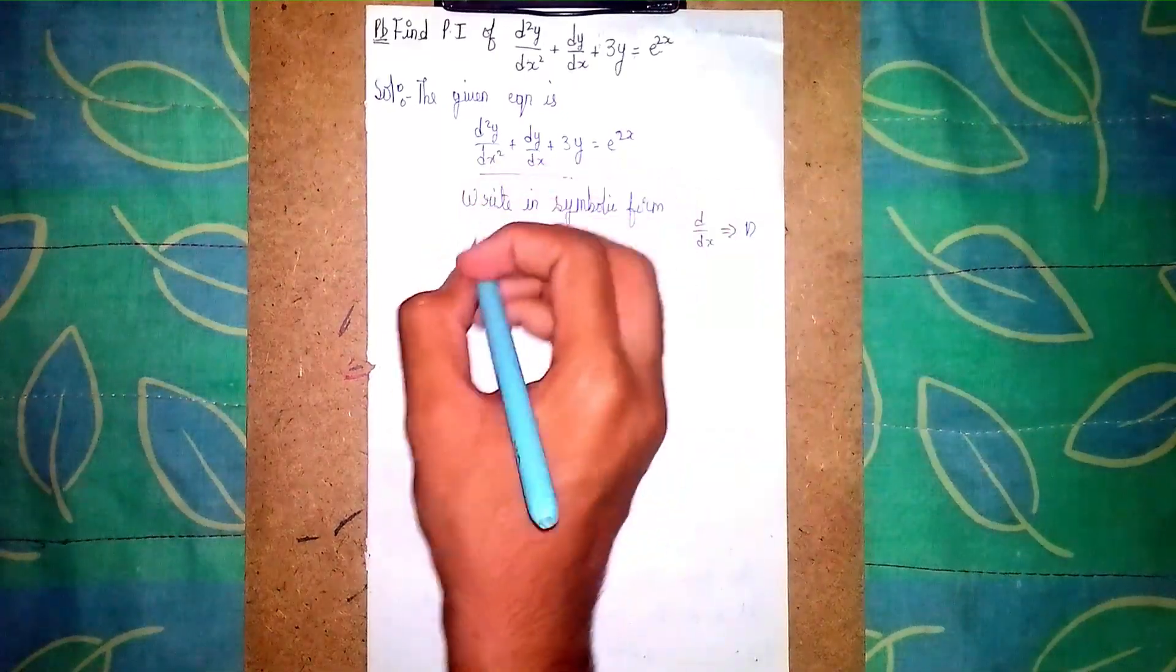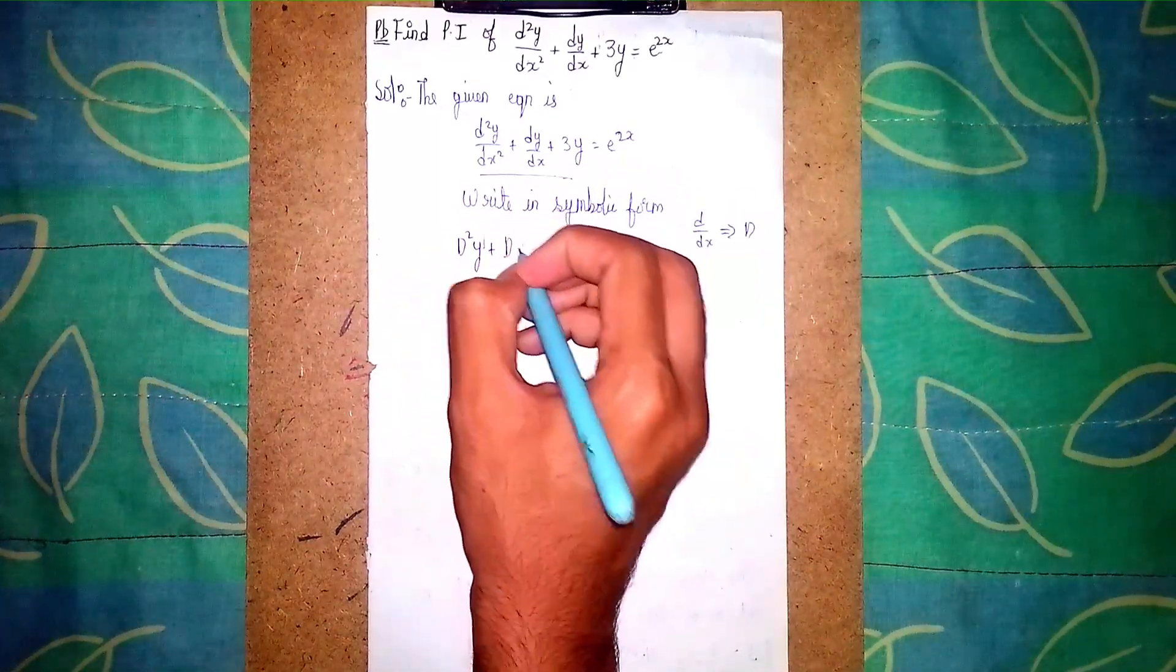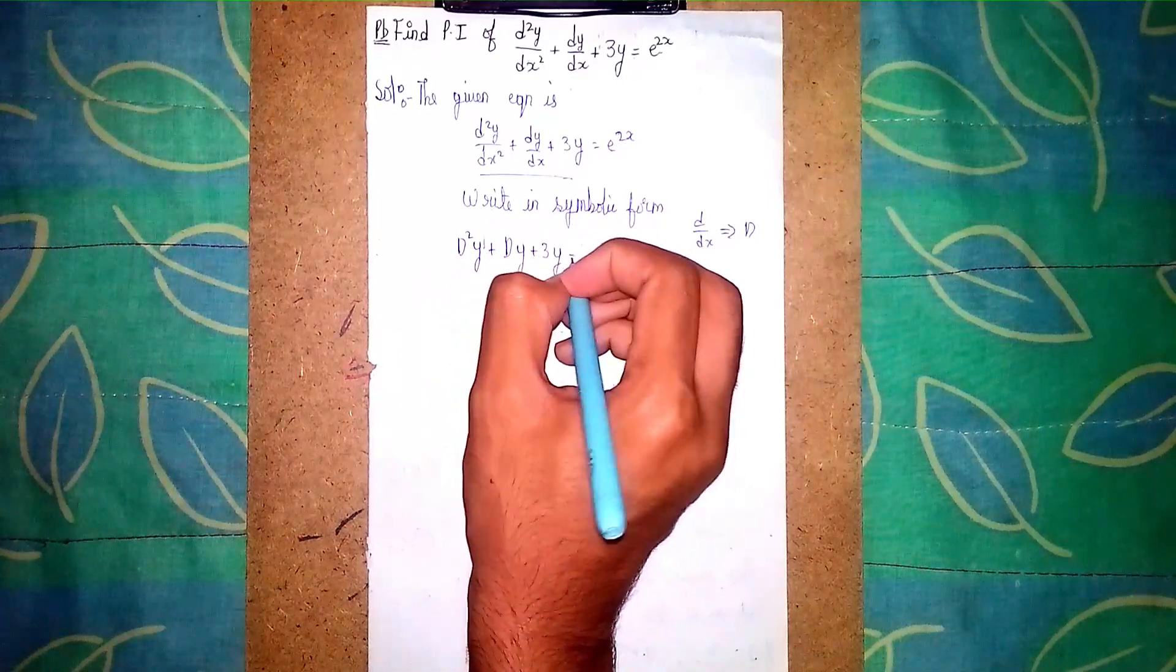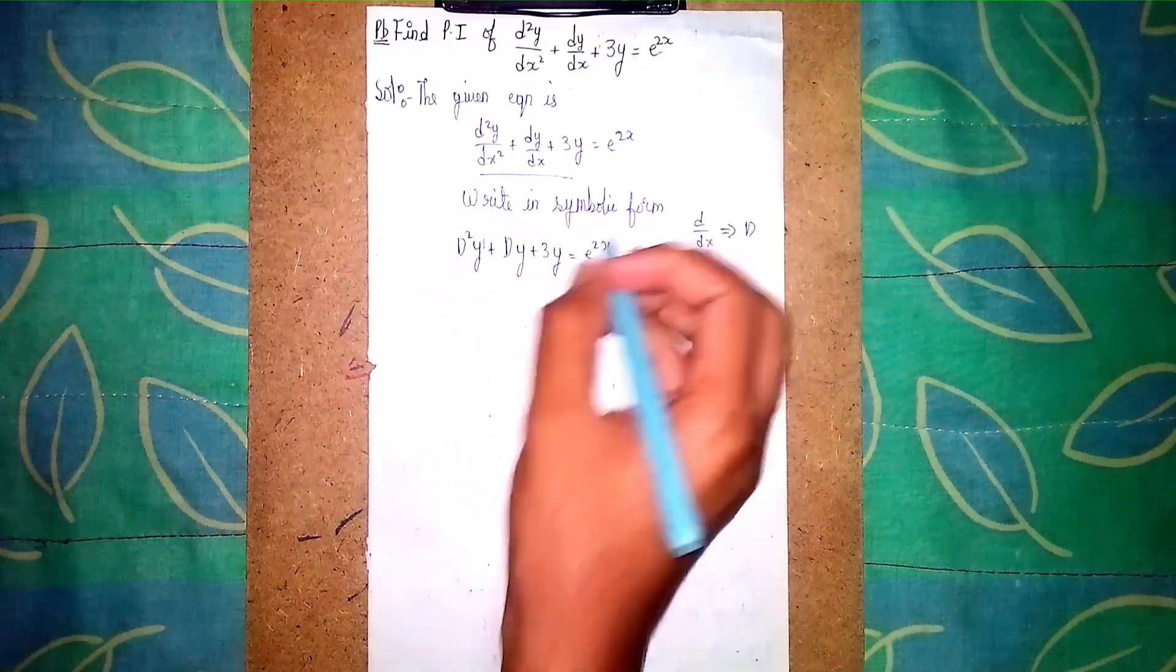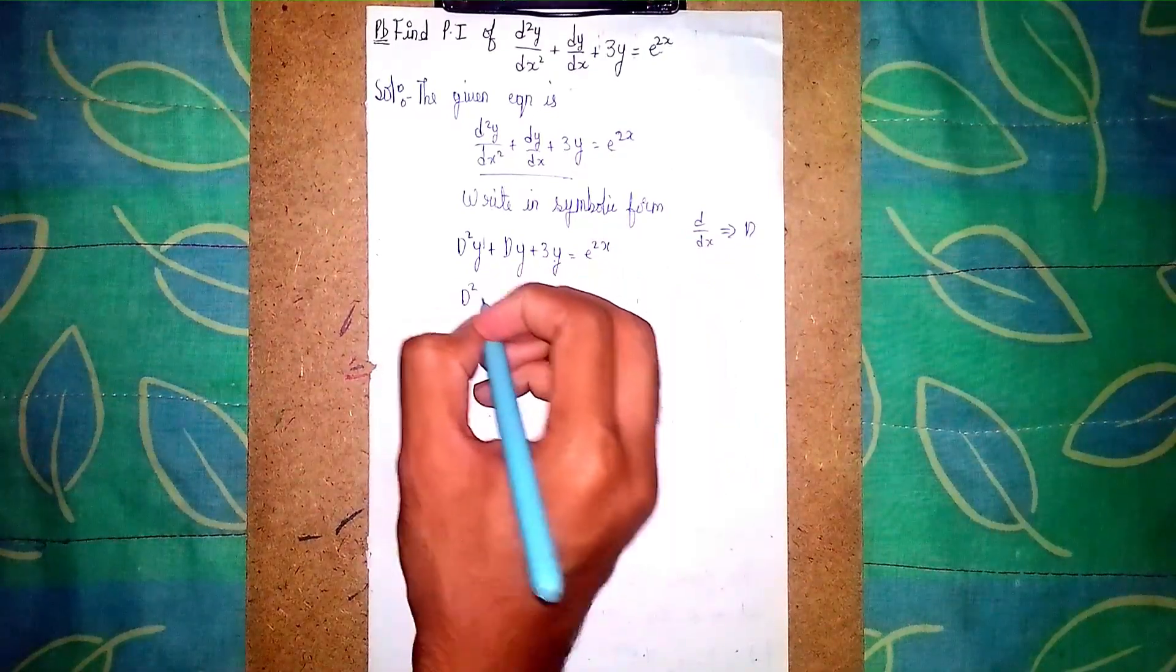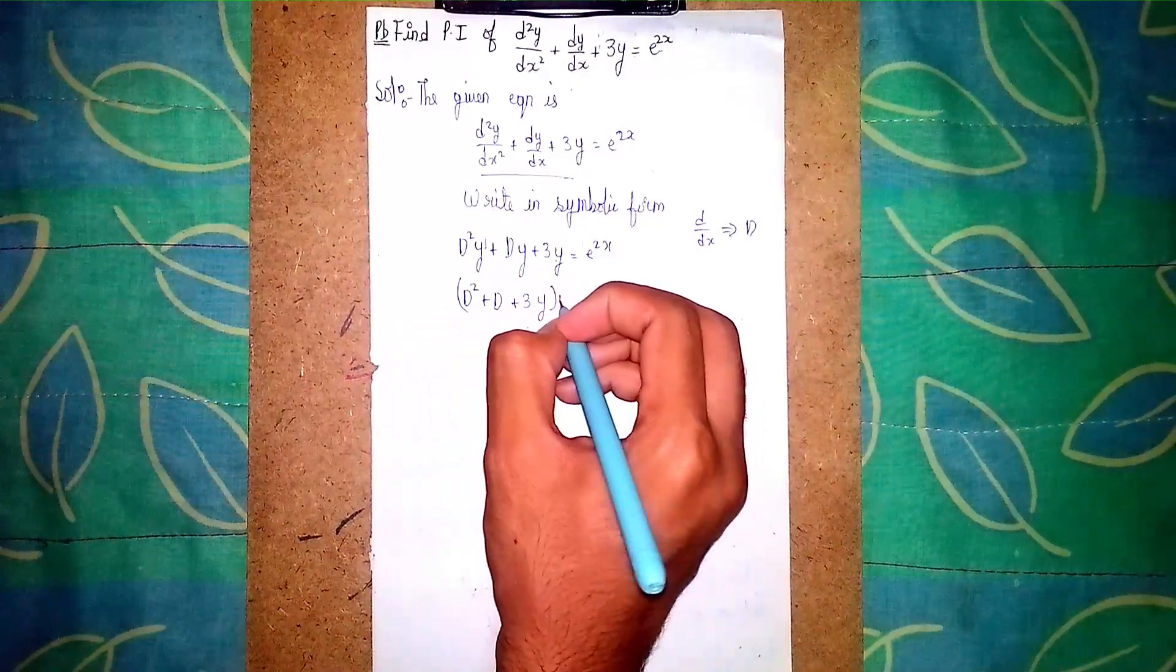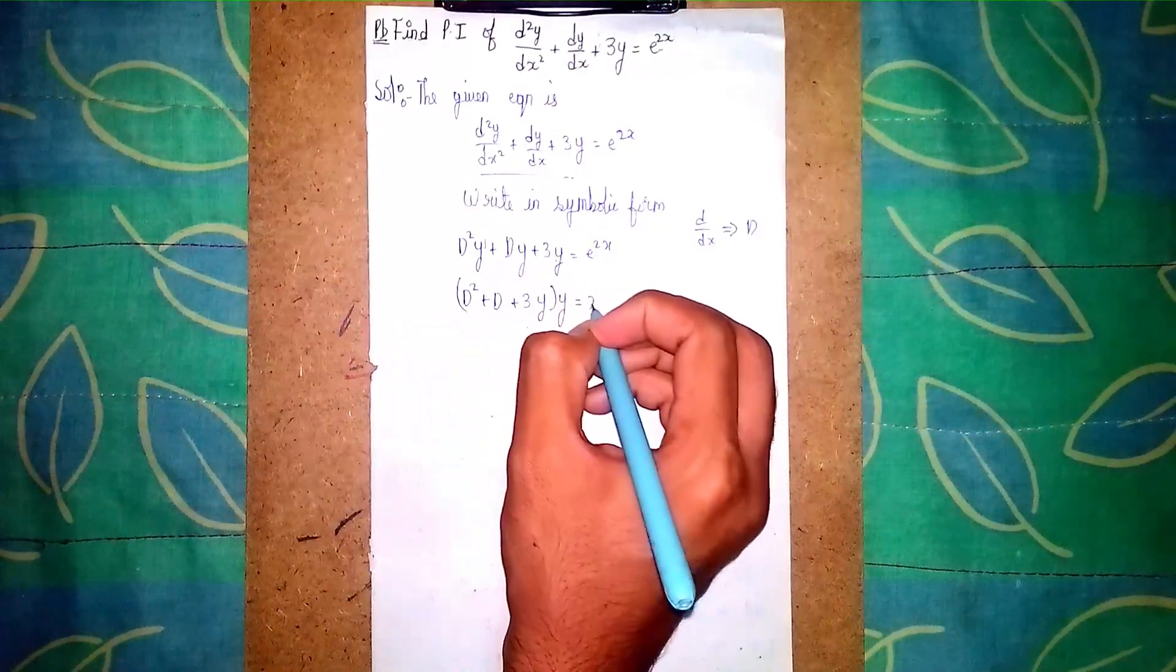So it becomes D²y + Dy + 3y = e^(2x). Now here we can take y as common, so (D² + D + 3)y = e^(2x).